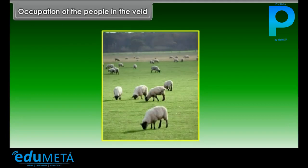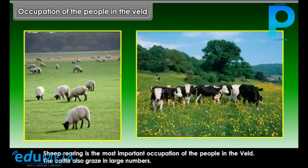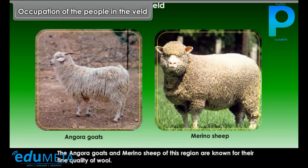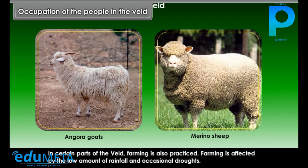Sheep rearing is the most important occupation of the people in the Veld. The cattle also graze in large numbers. The Angora goats and Merino sheep of this region are known for their fine quality of wool. The cattlemen supply most of the local needs of milk, mutton and wool. In certain parts of the Veld, farming is also practiced, though it is affected by the low amount of rainfall and occasional droughts.